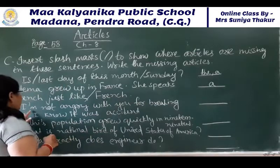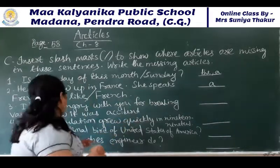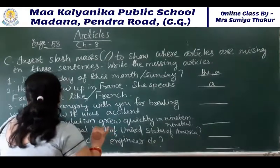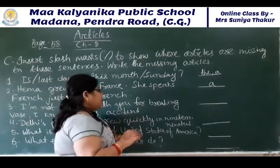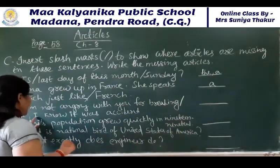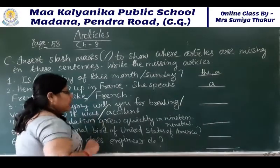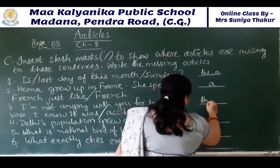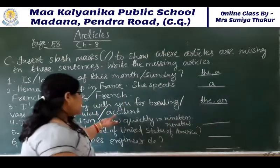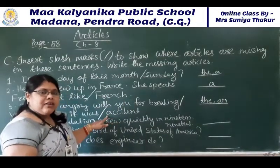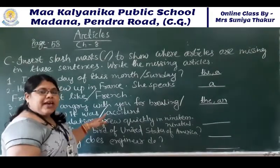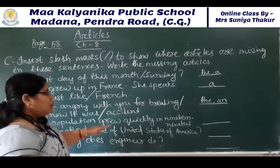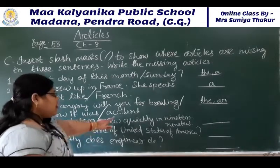Understood? Now we will see the next one. 'I am not angry with you for breaking the press. I know it was an accident.' Two articles are missing here. We have to put a slash after 'breaking' and after 'was'. We write 'the' for the first place. And 'an' for the second, because 'accident' starts with a vowel sound. So we read: 'I am not angry with you for breaking the press. I know it was an accident.'